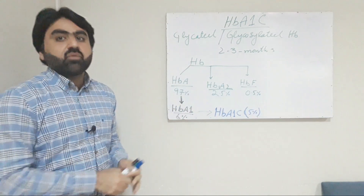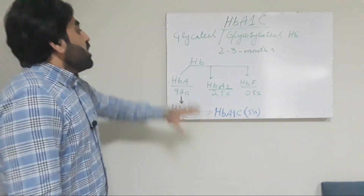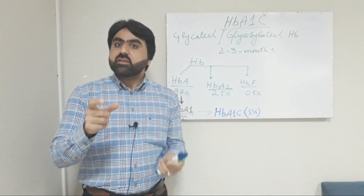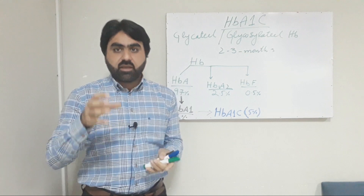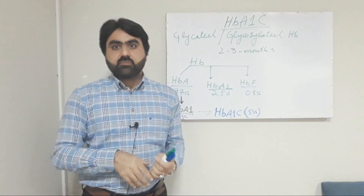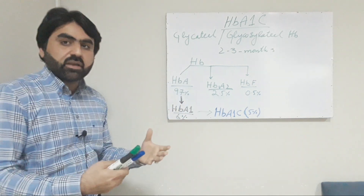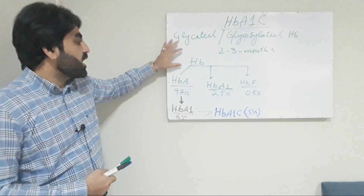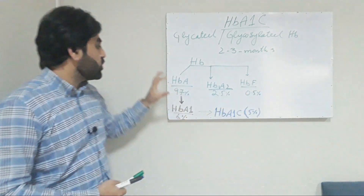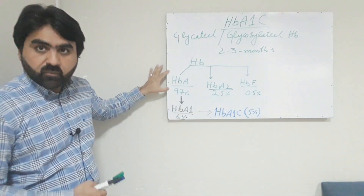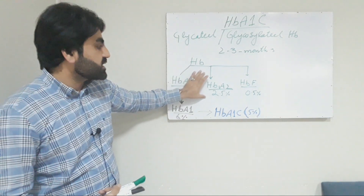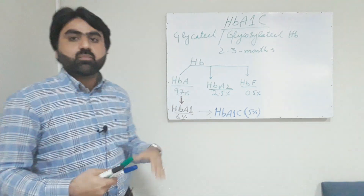We will discuss how it happens in a little detail. First of all, we know that hemoglobin is a protein present in the red blood cells of an individual, and it carries oxygen from the lungs to the other parts of the body. Normally in an adult individual, hemoglobin is comprised of three fractions: the first fraction is hemoglobin A, which is 97% of the total hemoglobin, and the second fraction is hemoglobin A2, which is 2.5%.